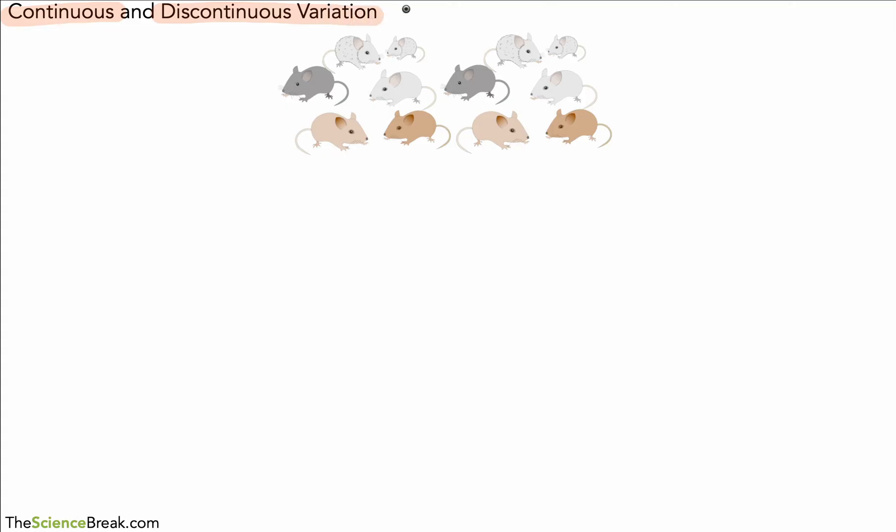You may remember if you've seen the video previous to this that the word variation means differences in features perhaps. So we've got a whole population of mice here and you can see there are some differences. The fur colour being probably the most obvious one. So that's the idea of variation.